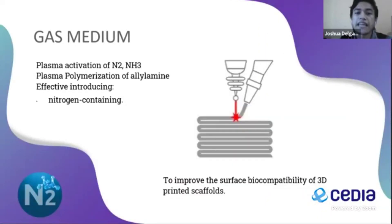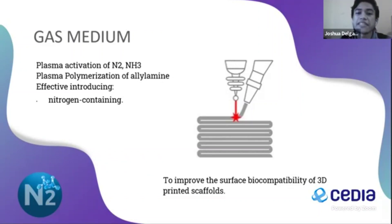A comparative analysis by Xiu Liu performed between the plasma activation of N2 and NH3 and the polymerization of allylamine shows that these are effective in introducing nitrogen-containing groups, with particularly high implantation of amine functionalities to improve the surface biocompatibility of 3D printed scaffolds.